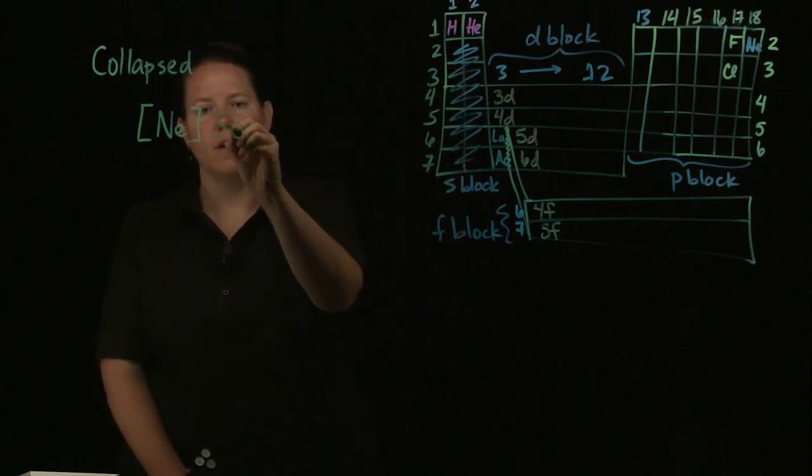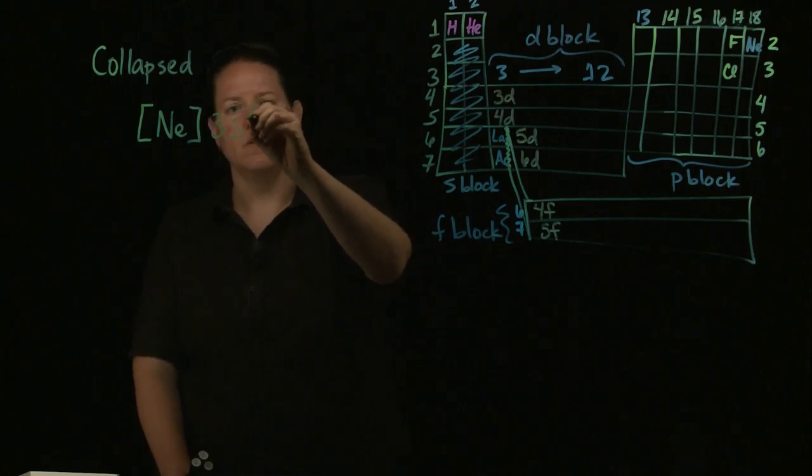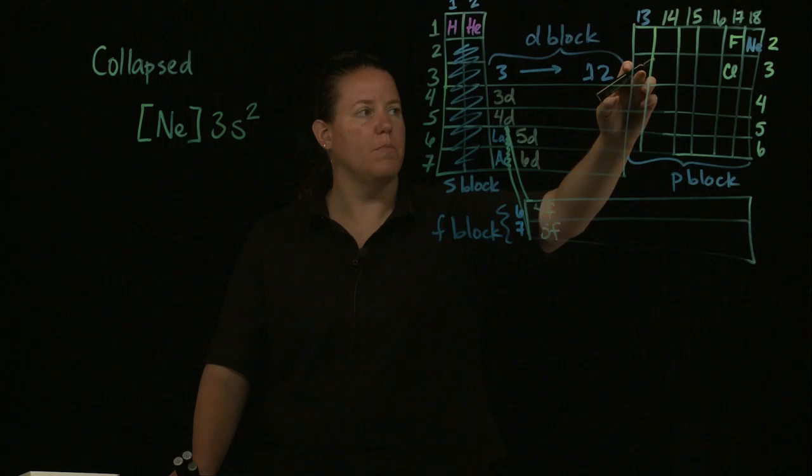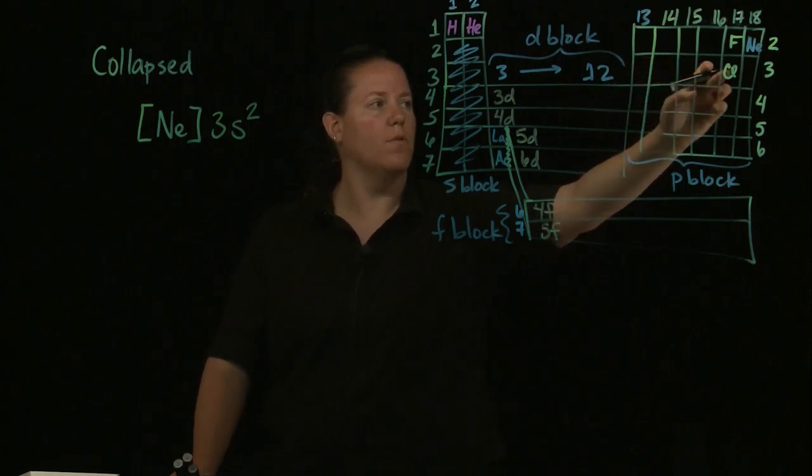That's through the end of period 2. So I start at period 3. This is the S block. So I put 3S, count 1, 2. And then I go over to the other part of period 3. This is 3P. And I go 1, 2, 3, 4, 5.